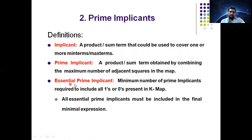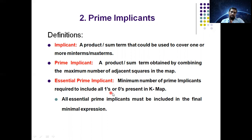The third definition: essential prime implicant. What is an essential prime implicant? The minimum number of prime implicants required to include all the 1s and 0s present in the K-map. These are the prime implicants which are definitely required in order to cover all the 1s in the K-map if it is SOP, and all the 0s if it is POS.